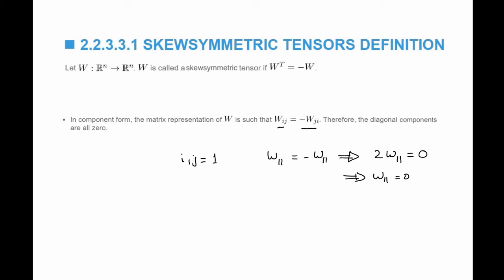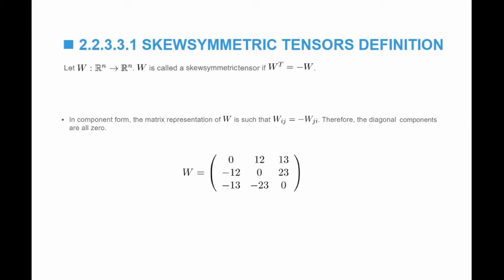And if you repeat with I and J equal to 2, and so on, and 3, you'll get that the diagonal components always equal to zero. For example, what you see here is a 3 by 3 skew-symmetric tensor. The diagonal components are all zero. The off-diagonal components are negative of each other.